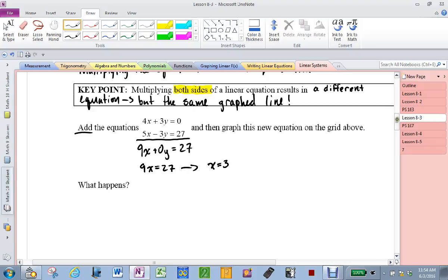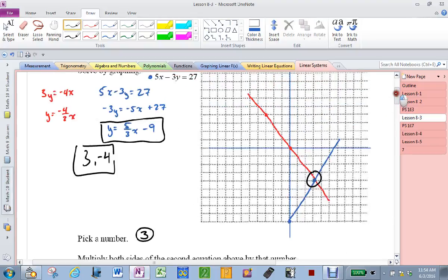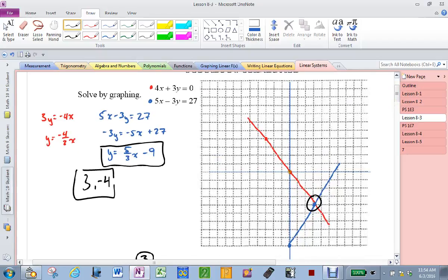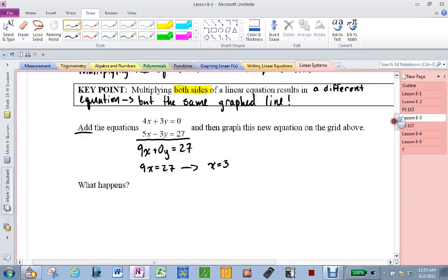Graph that on the grid above. Let's go up to the top. Where is x equals three? Three to the right. One, two, three. And what kind of line do I draw when x equals three? Is it vertical or is it horizontal? Vertical. Because x always has to be three. Holy crap. What just happened? It went through my solution point, didn't it?